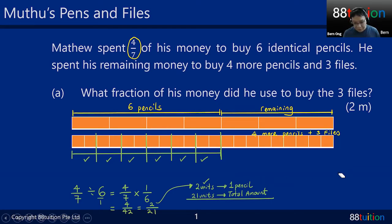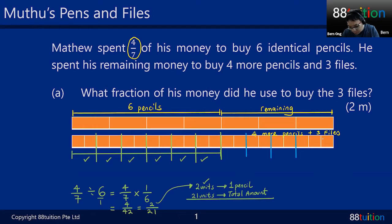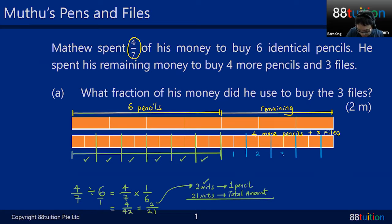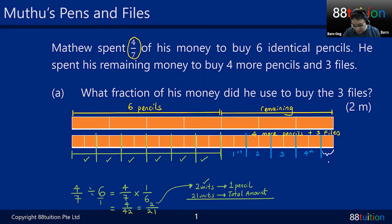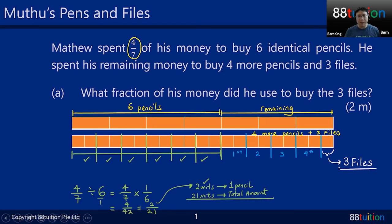This remaining amount — he went to buy four more pencils. So we cut again: two units one pencil, two units one pencil, two units one pencil, two units one pencil. That gives pencils one, two, three, and four. He's left with a small portion, which he used to buy his three files.